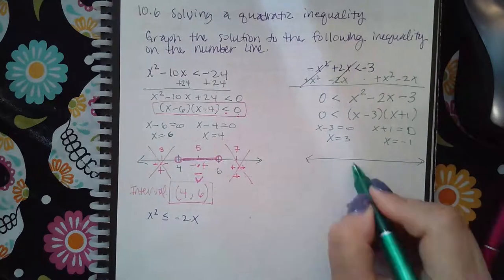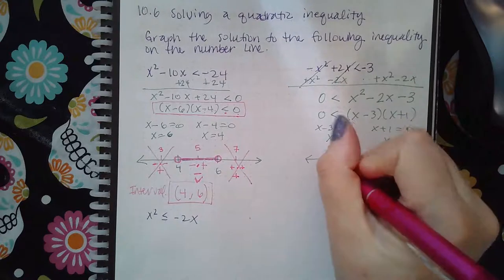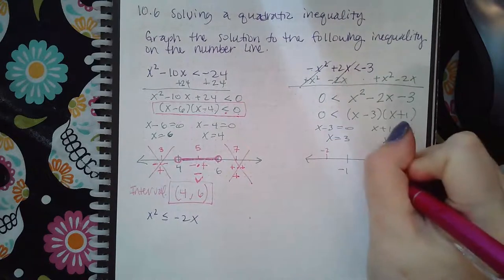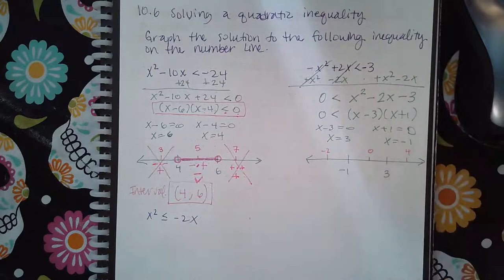On a number line, negative 1 is on the left, 3 is on the right. Pick some test values like negative 2. Between a negative and a positive, I always pick zero, and then another value over here.